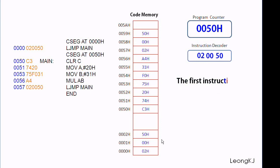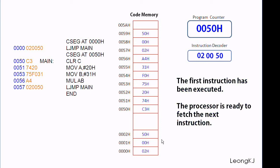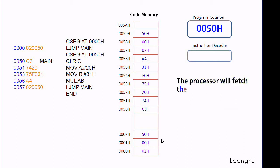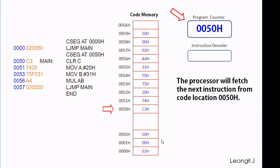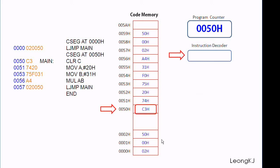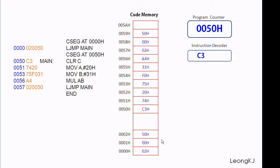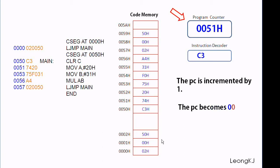The first instruction has been executed. The processor is ready to fetch the next instruction. The processor will fetch the next instruction from code location 0050. The code C3 hex is fetched. The PC is incremented by 1. The PC becomes 0051.